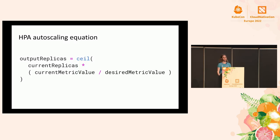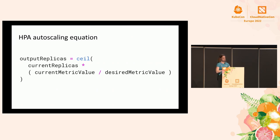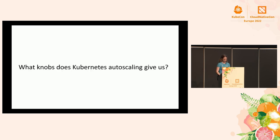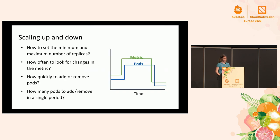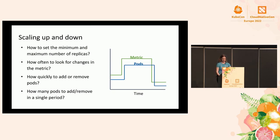You might be wondering how the horizontal pod autoscaler figures out how many replicas to add. It's a simple equation: it takes the ratio of the current value for your metric — like CPU or throughput — divided by the desired value, and uses that to determine the right number of replicas. So it's a lot more than just the metric. What knobs do we have? We can set the minimum and maximum number of replicas, how often we check for changes in the metric, how quickly to add or remove pods, and whether to cap the amount of change allowed at any given period.